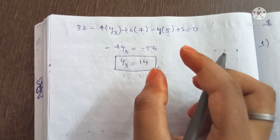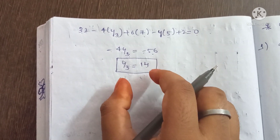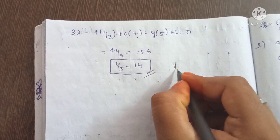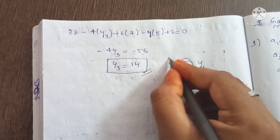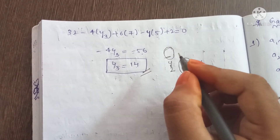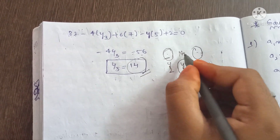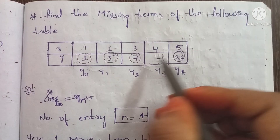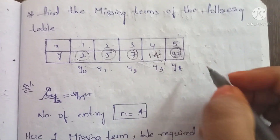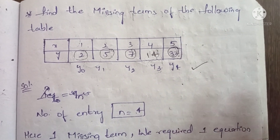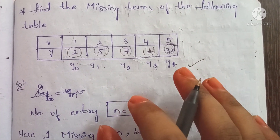The y3 value is 14, which lies between 7 and 32, so this answer is correct. Post your doubts in the comment section. In the next video I will tell you about two missing terms. Thank you for watching.